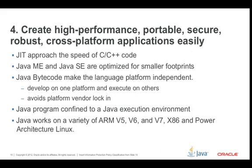Number four: create high-performance, portable, secure, robust cross-platform applications easily. All of the features of Java are really high-performance, portable, secure, robust, and cross-platform. The JIT compiler, as far as high-performance goes, is approaching the speed of C or C++ code, and in some cases it's actually exceeding it.